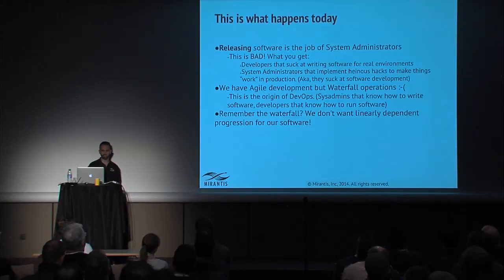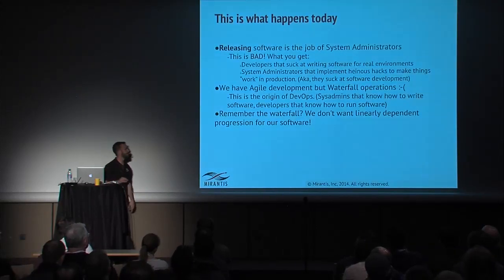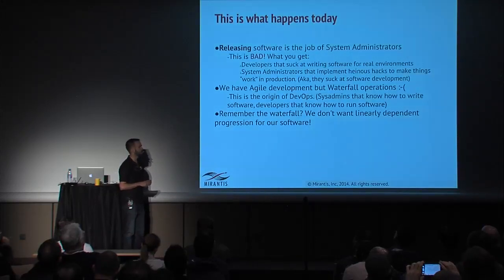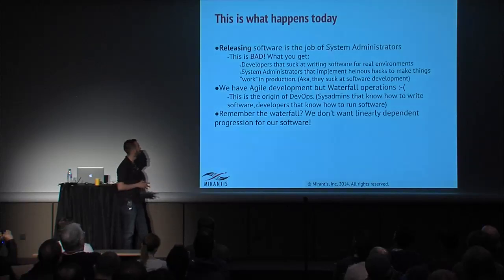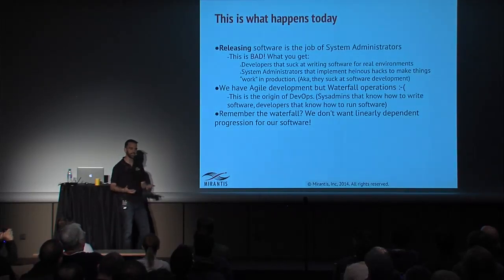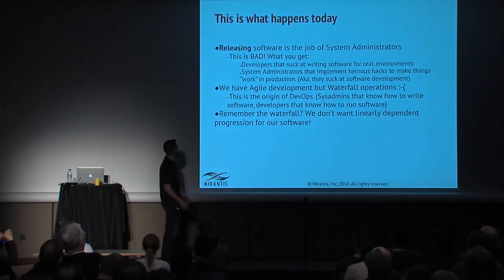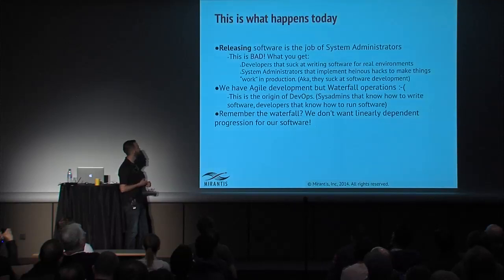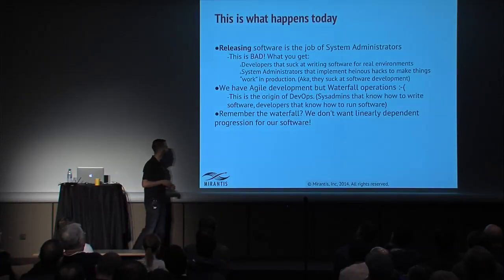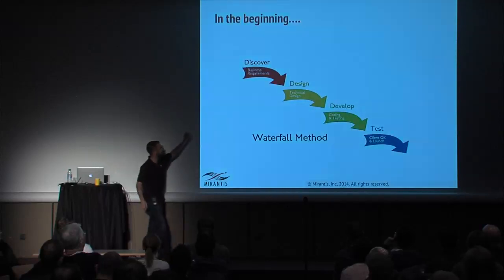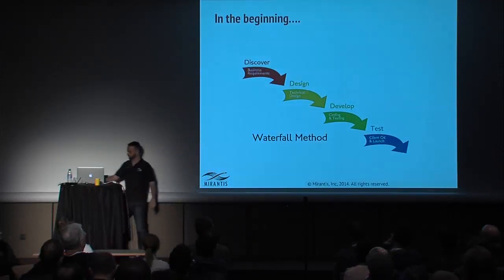Releasing software has been the job of system administrators, and that's a problem because sysadmins are good at making things run but not at designing software — so they implement heinous hacks to make things work. Developers really struggle writing software for real environments; they want to stay in the abstract. So we have agile development but waterfall operations. This is how DevOps started — sysadmins who know how to be developers, or at least collaborate with developers, and developers who know how to run stuff.